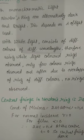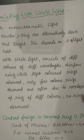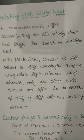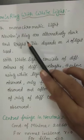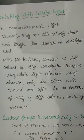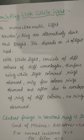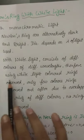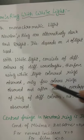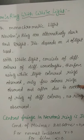Now we discuss Newton's rings with white light. If we replace the monochromatic source with white light, the ring pattern changes. With monochromatic light, Newton's rings are alternately dark and bright, and the diameter depends on the wavelength used. But white light consists of different colors with different wavelengths. Therefore, using white light, colored rings are observed. Only a few colored rings are observed, and after that, due to overlapping of rings of different colors, no rings are observed.